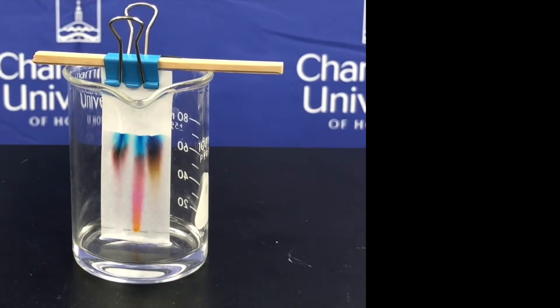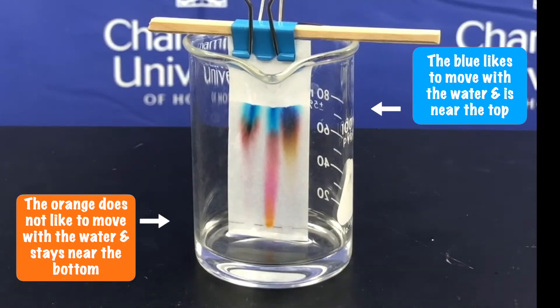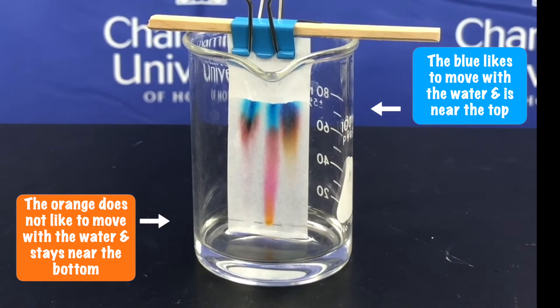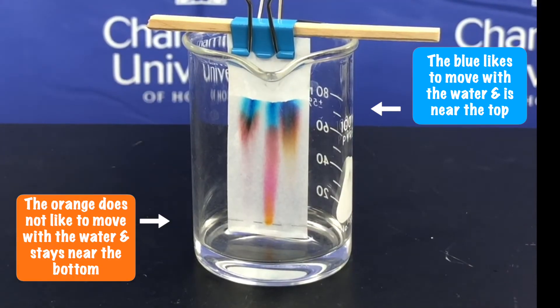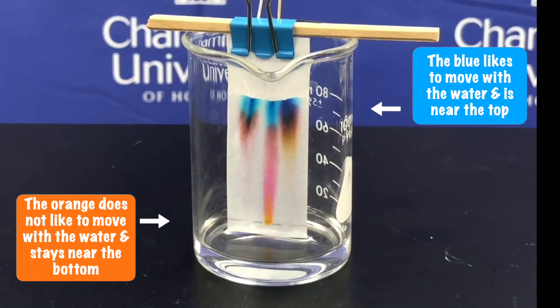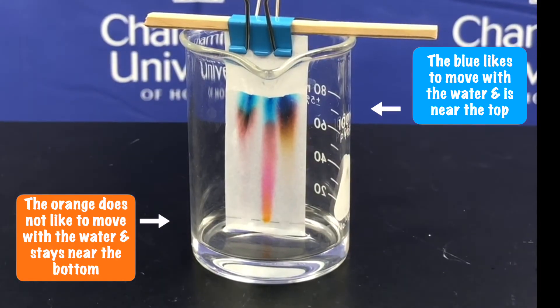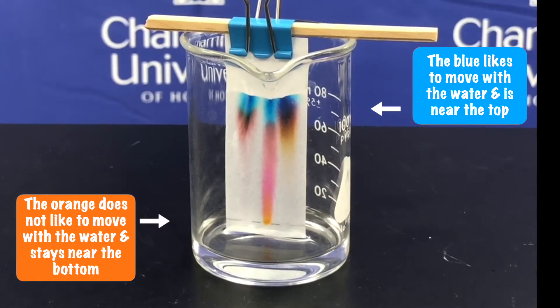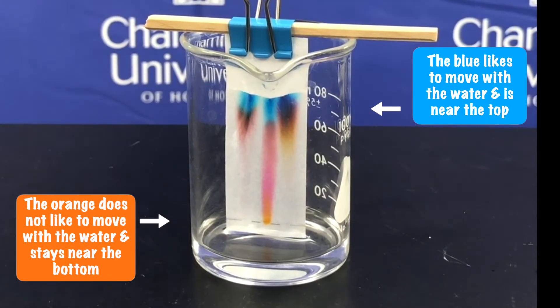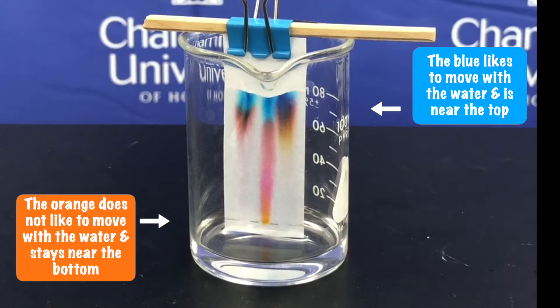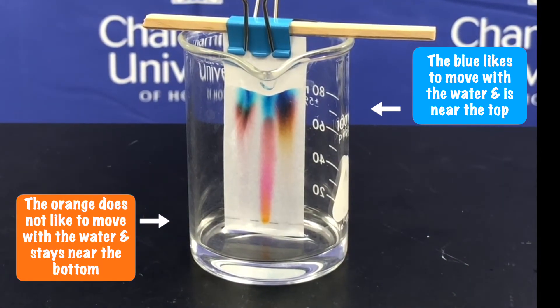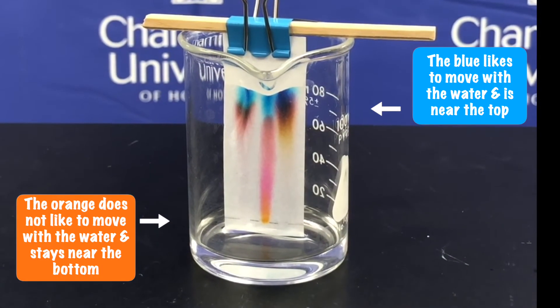So in this example, we can see that the yellow orange color at the very bottom of the piece of paper actually doesn't really like to move with the water very much and sticks around near the bottom of the chromatography paper. However, the blues at the top of the paper like to move with the water quite a bit, and so they move upwards towards the top.